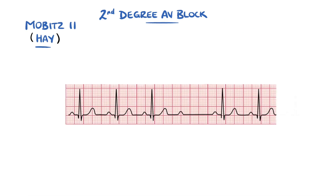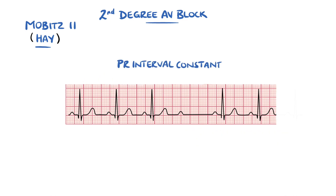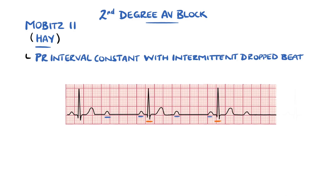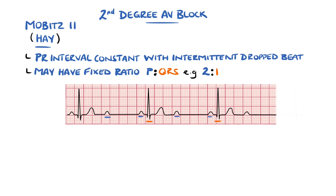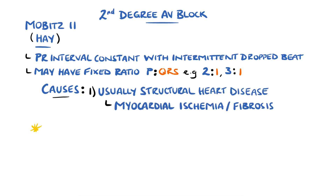In Mobitz II, or Hay block, there is no progressively increasing PR interval, only an intermittent P-wave that is not conducted. There is sometimes a fixed ratio between the number of P-waves for every elicited QRS, such as 2 to 1, but they can be higher. Mobitz II will usually have structural heart disease, often myocardial ischemia or fibrosis, and in 75% of cases the anomaly is found below the bundle of His, which means broad QRS complexes are generated.